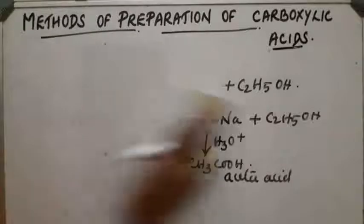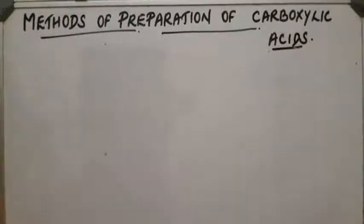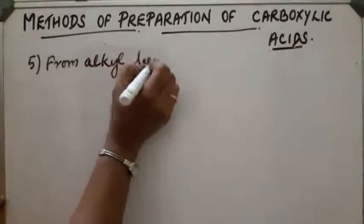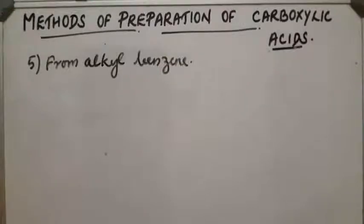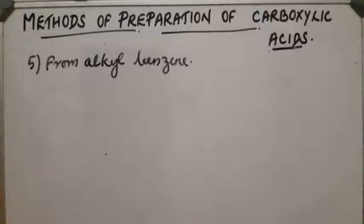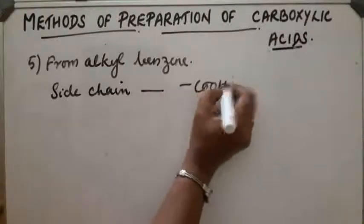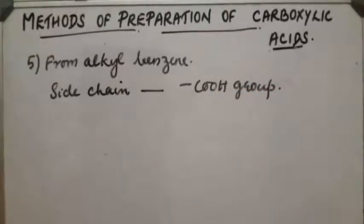Sixth method: from alkyl benzenes like toluene. Aromatic acids are obtained by oxidation of alkyl benzenes with acidic or alkaline KMnO4 or chromic acid. The side chain gets oxidized to a COOH group — whatever the length of the side chain, that part gets converted into a COOH group, the same reaction takes place.